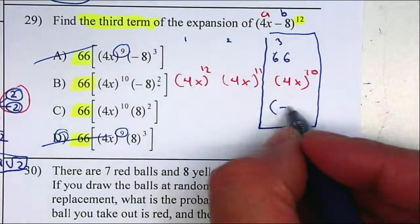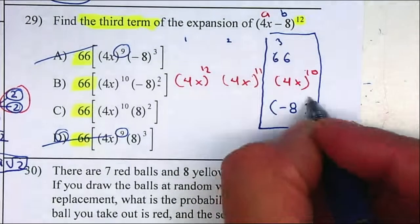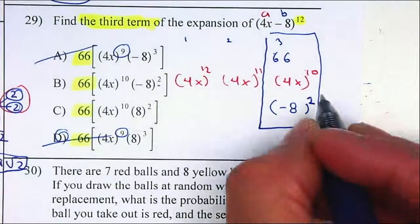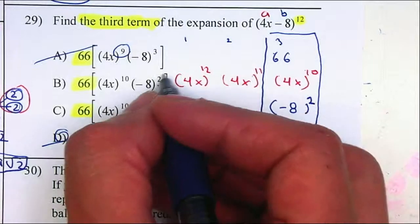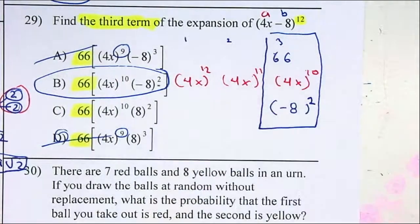Will be a negative 8. This is a 10, they need to add up to 12, so my exponent will be 2. So therefore my answer is letter B. And just be careful, don't forget your negative as part of your answer.